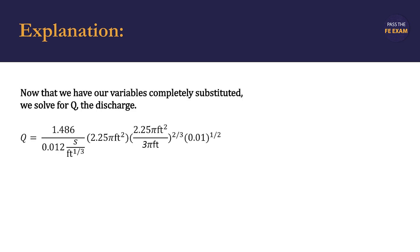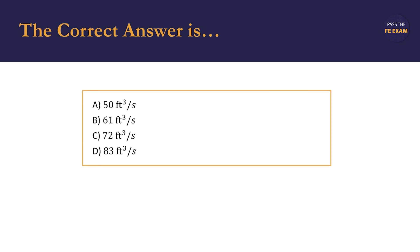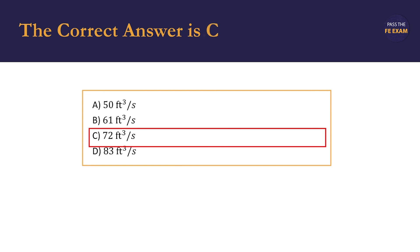We begin the process of solving for Q and simplify our fractions. We find the product to be 72.25 and verify that the units are what we expect for discharge — cubic feet per second. Referring back to our list of potential answers, we see that we're closest to answer C, 72 cubic feet per second. So we should go with answer C.